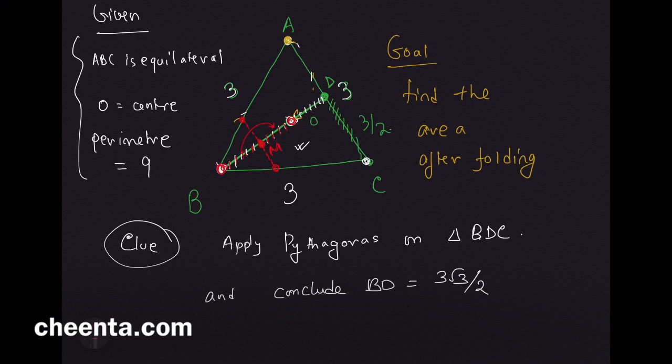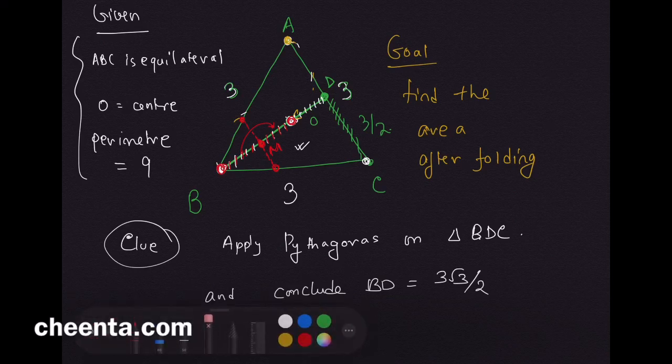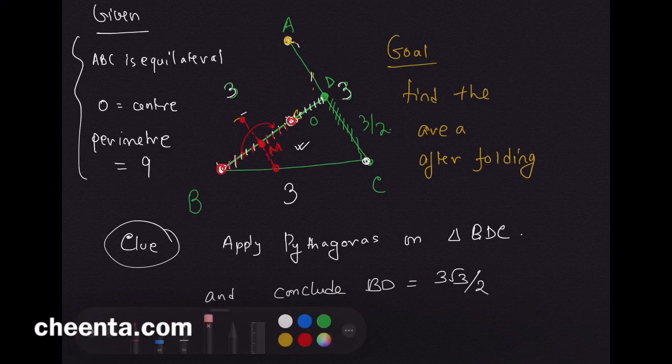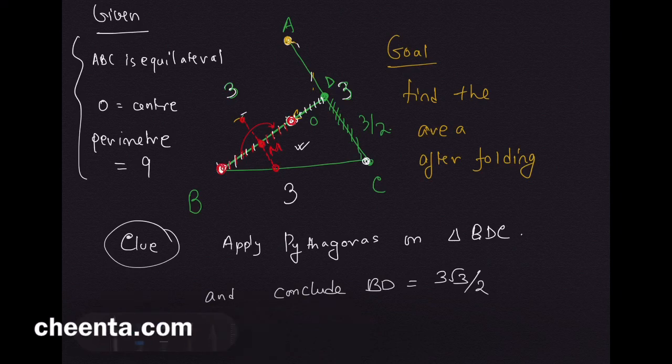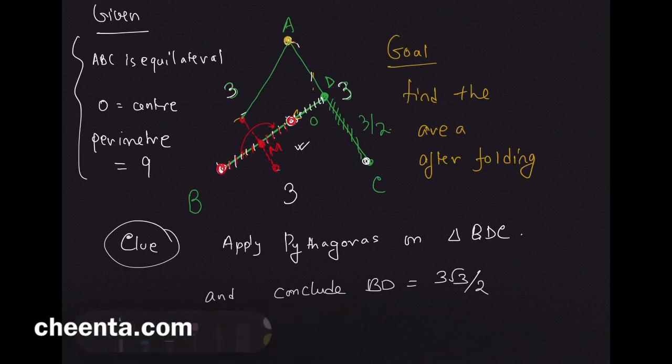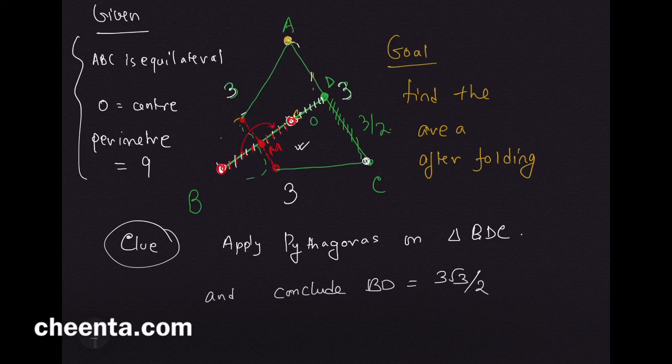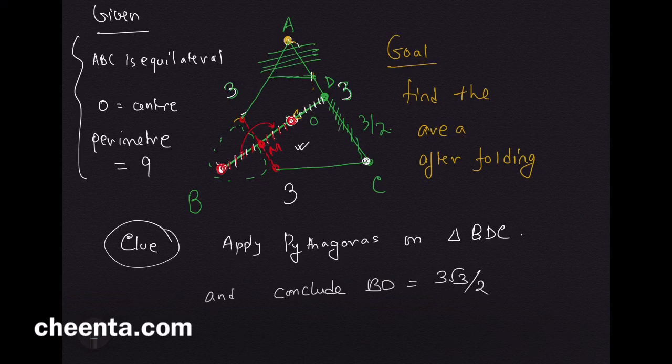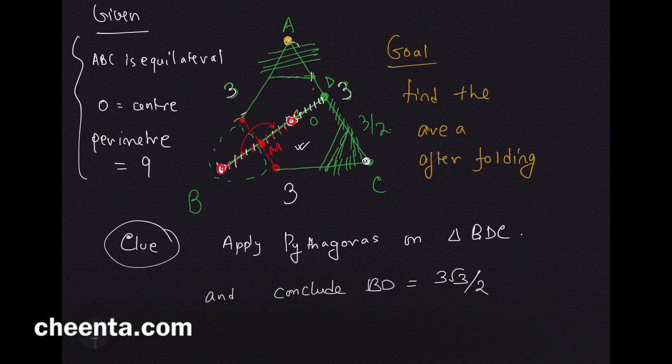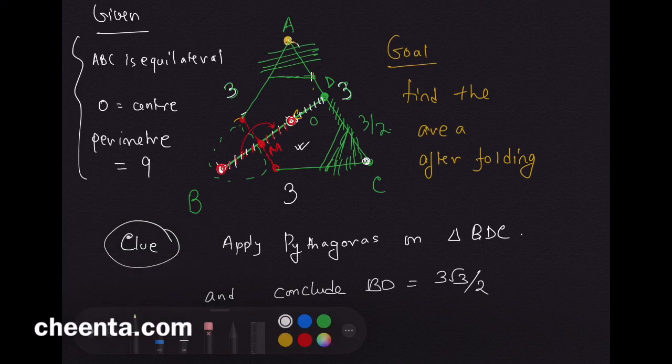In your final picture after you have folded, this part will be there and this part will be there, but this little part right here will be vanished because you have folded it and it will fall on O. Similarly here, everything in this portion will be vanished, and you will get a hexagon.